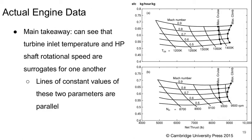Now let's look at some actual engine data to see how these parameters are related. We have specific fuel consumption on the vertical axis and net thrust on the horizontal axis, with two plots. One shows curves of Mach number, and the closer to vertical lines show T0.4 values in the top plot and high pressure shaft rotational speed in RPM in the bottom. What we can see very obviously is that turbine inlet temperature and HP shaft rotational speed are essentially able to function as surrogates for one another because the plots look almost identical.